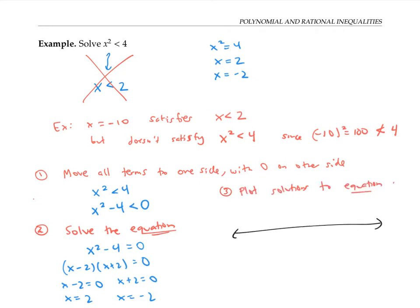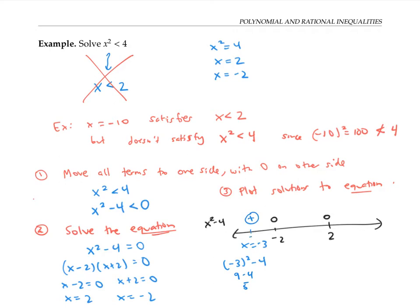I'll plot the solutions to my equation on the number line — negative two and two — those are the places where x squared minus four equals zero. Since I want to find where x squared minus four is less than zero, I need to know where the expression is positive or negative. A good way to find that out is to plug in test values. I'll start with a value less than negative two, say x equals negative three. Plugging in: negative three squared minus four is nine minus four, which is five — a positive number. So at negative three, x squared minus four is positive.